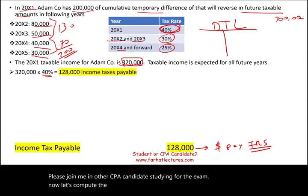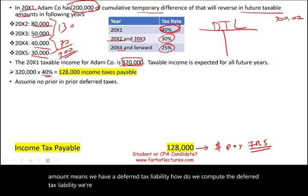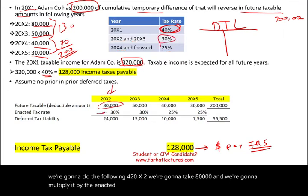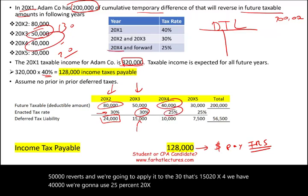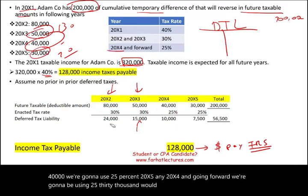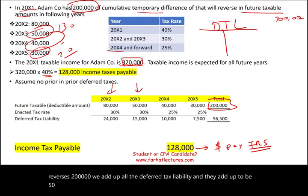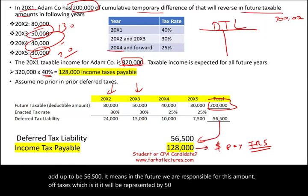Now let's compute the deferred tax liability, assuming no prior deferred taxes. For 20X2: $80,000 × 30% = $24,000. For 20X3: $50,000 × 30% = $15,000. For 20X4: $40,000 × 25% = $10,000. For 20X5 and going forward: $30,000 × 25% = $7,500. The total reversals equal $200,000 and the total deferred tax liability adds up to $56,500, representing the future taxes we are responsible for.